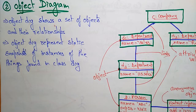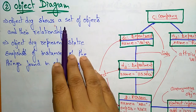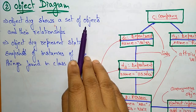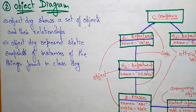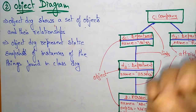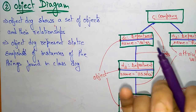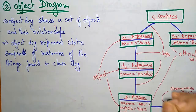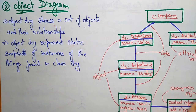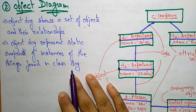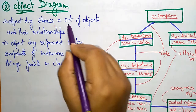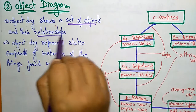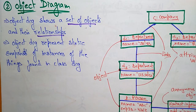Now let us see the object diagram. The object diagram shows a set of objects and the relationships between them, whereas the class diagram consists of a set of classes, interfaces, collaborations, and the relationships between those. The object diagram consists of a set of objects and relationships.